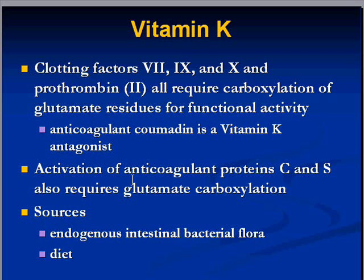A couple of major powerful anticoagulant proteins — namely protein C and protein S — are also dependent on vitamin K. Vitamin K deficiency will generally result in inadequate clotting because of inadequate clotting factors, in other words a hemorrhagic or bleeding diathesis.